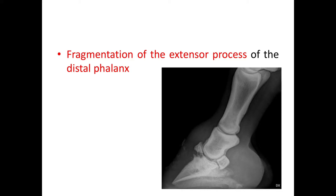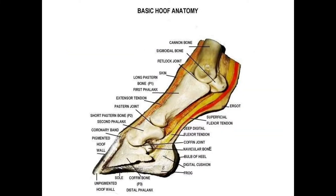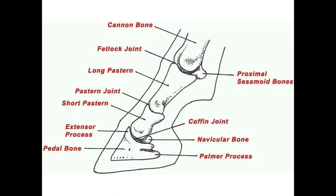Before going to the details of the disease, I want to show you the basic hoof anatomy or the basic distal limb anatomy in equine. Here you can see the first phalanx, second phalanx, and the distal phalanx. The extensor process is on the top of the distal phalanx, and in this diagram the extensor process is marked very clearly.